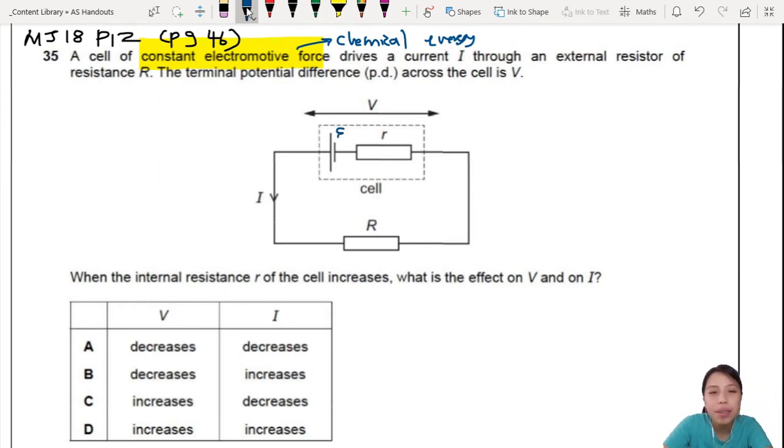So we have an EMF E for that battery, and it drives a current, pushes the current out through an external resistor of resistance R. In this case, V is what we call our terminal potential difference, what you measure at both ends of the terminal. So if you connect a voltmeter like that, connect to here and here.